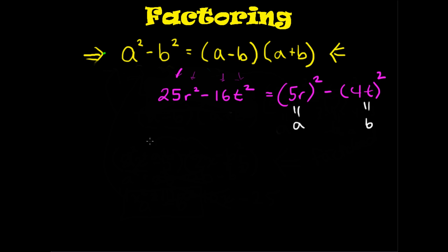So you can substitute them into the identity, and you get, instead of a, you place in 5r minus, and instead of b, you place 4t. Now, this is the factored form. This is the answer.